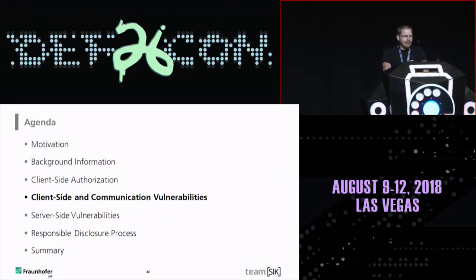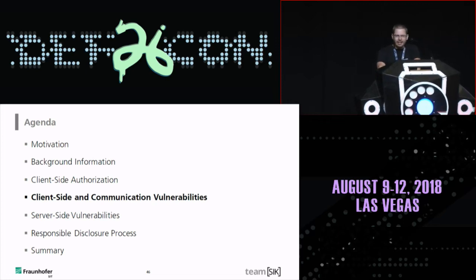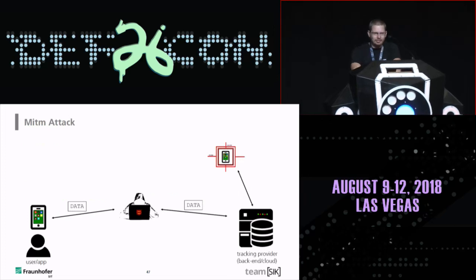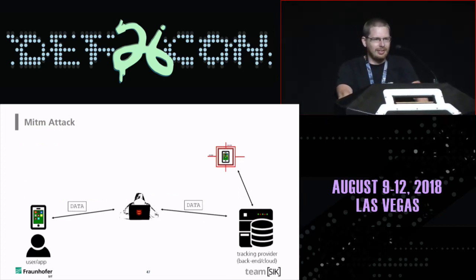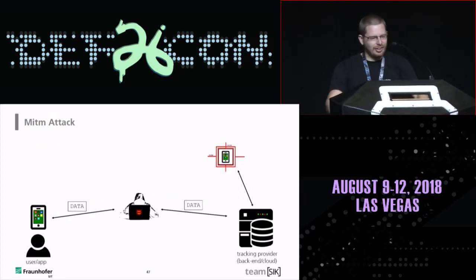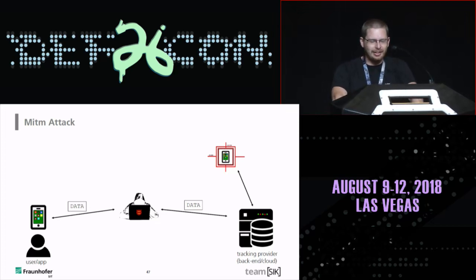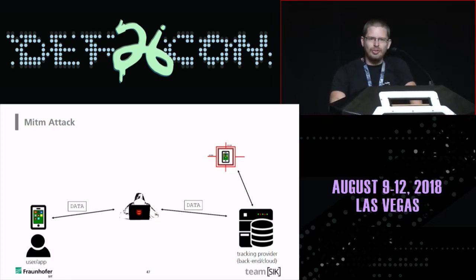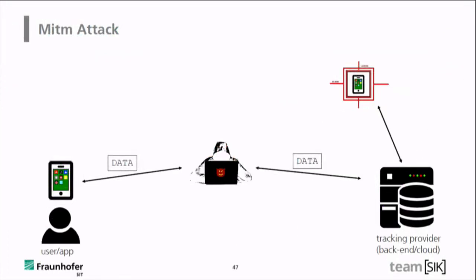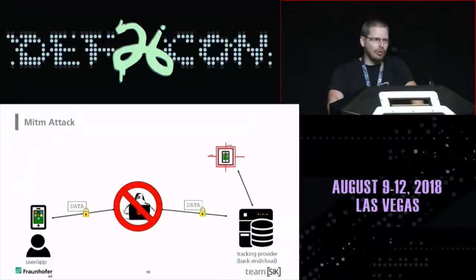Now I'll explain the rest of our findings — client-side and communication vulnerabilities. For those not aware: a man-in-the-middle attack means getting as an attacker between the user and the backend, and trying to eavesdrop or manipulate the communication. If the app communicates in plain text, it's trivial for an attacker. Another case is if the app has implementation flaws like broken encryption that can easily be bypassed. The only reliable protection is to implement secure, correct, confidential, integrity-protected, authenticated communication.